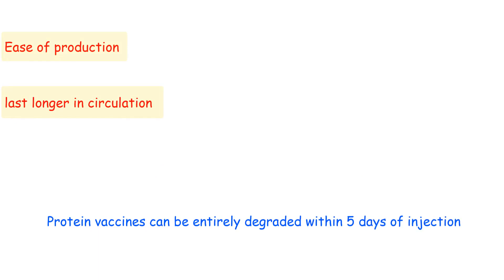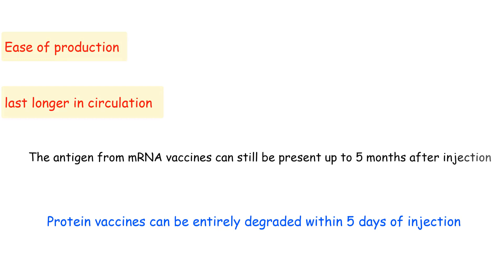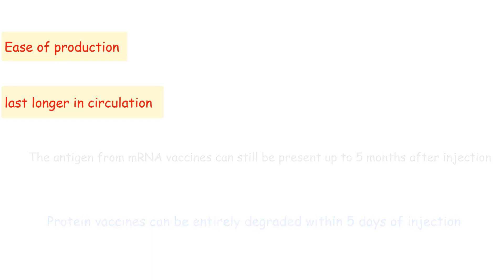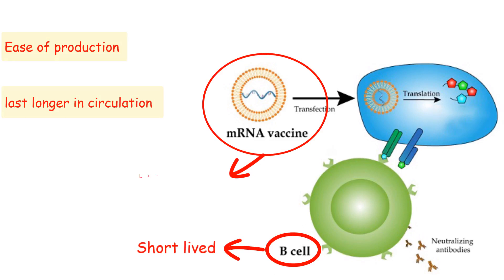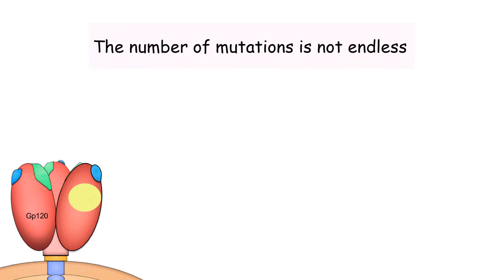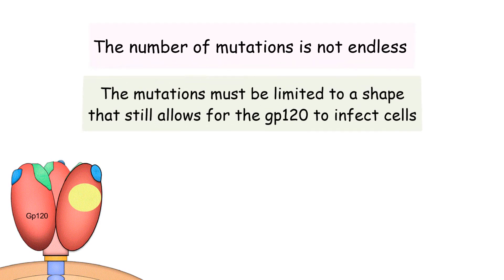An additional benefit of mRNA vaccines is that they last longer in circulation than other vaccine types. Protein vaccines can be entirely degraded within five days of injection. In contrast, some studies have shown that the antigen from mRNA vaccines can still be present up to five months after injection. While the B cells that produce broadly neutralizing antibodies are short-lived, the antigen from the mRNA vaccine is long-lasting, allowing greater time for the antigen to stimulate short-lived B cells.